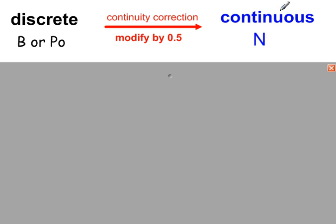to a continuous distribution, so that's the normal distribution here, we need to modify the probability by a half and this is called a continuity correction.